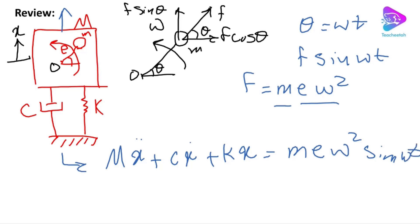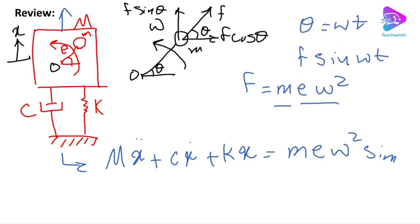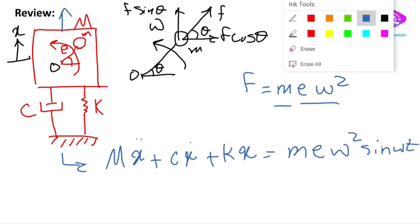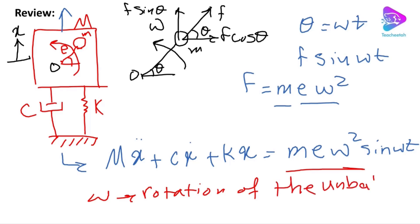For this topic you need to recall centrifugal force and acceleration from dynamics, and also how to find force components in the x and y directions. As you can see, the equation of motion is very similar to the case of harmonic excitation — the only difference is basically the amplitude of the force. Remember, omega is the frequency of rotation of the unbalanced mass.